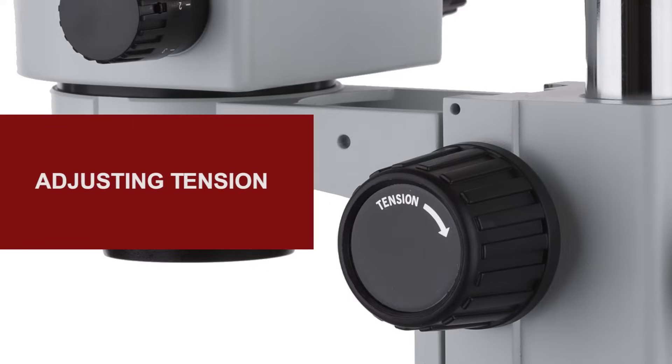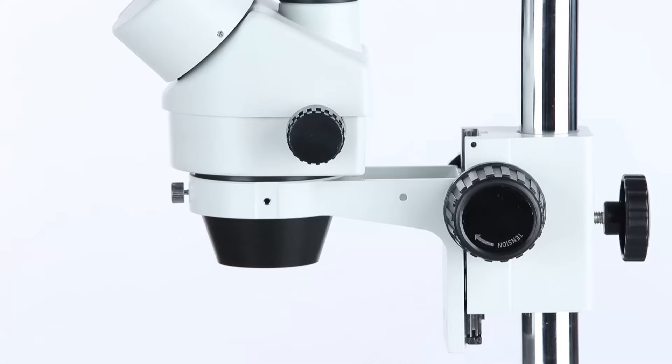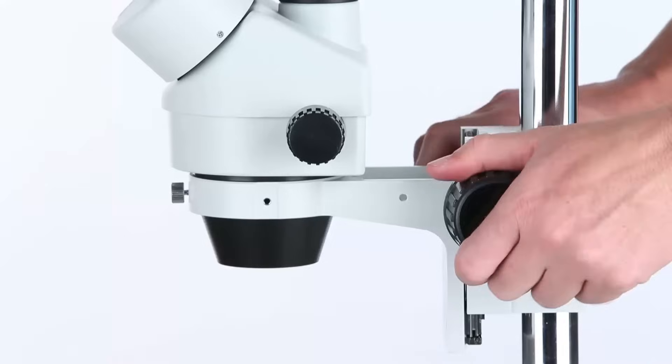To adjust the focus tension on the SM2 Series Stereo Microscope, look for the focus adjustment knob that says tension. While holding the opposite knob in place,